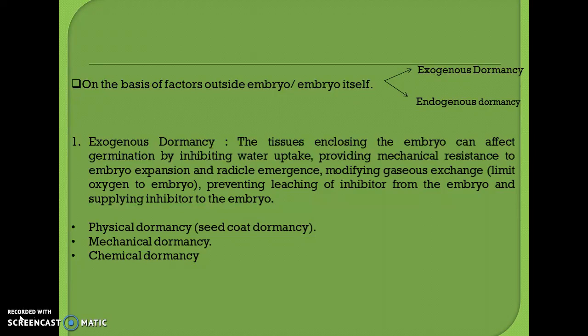In exogenous dormancy, the tissues enclosing the embryo can affect germination by inhibiting water uptake, providing mechanical resistance to embryo expansion and radicle emergence, modifying gaseous exchange, preventing leaching of inhibitors from the embryo, and supplying inhibitors to the embryo.